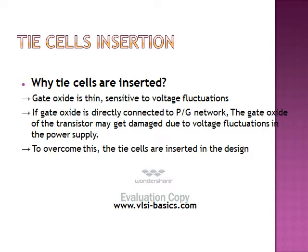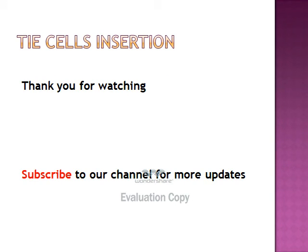Why are tie cells inserted? In lower technology nodes, the gate oxide of the transistor is so thin and sensitive to voltage fluctuations in the power supply. If the gate of the transistor is directly connected to the power or ground network, the gate oxide of the transistor might be damaged due to voltage fluctuations in the power supply. To overcome this disadvantage, tie cells are inserted.